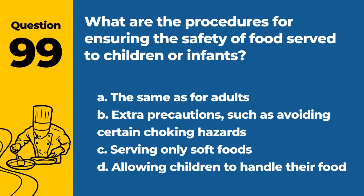Question 99. What are the procedures for ensuring the safety of food served to children or infants? a. The same as for adults. b. Extra precautions such as avoiding certain choking hazards. c. Serving only soft foods. d. Allowing children to handle their food. Answer: b. Extra precautions such as avoiding certain choking hazards. Special care is needed when serving food to children or infants.